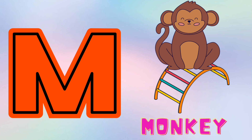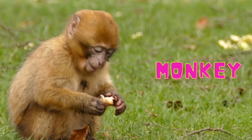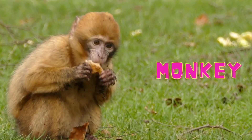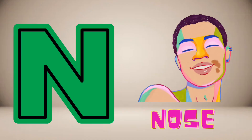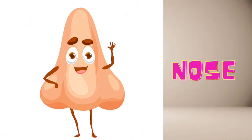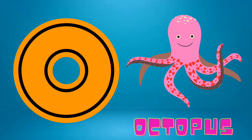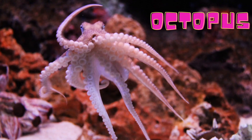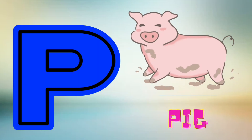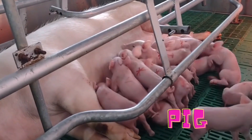A is for monkey, monkey. A is for nose, nose. A is for octopus. O, o, octopus. A is for pig, pig.